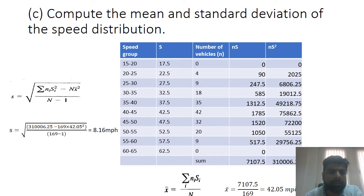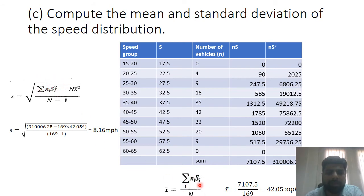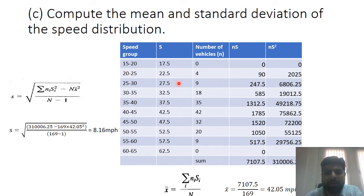The third task is to find the mean and standard deviation. The mean equation requires n (number of vehicles in each speed group) multiplied by s (middle speed). I inserted the middle speed for each group — for example, between 15 and 20 the middle value is 17.5. Multiplying and summing gives 7107.5, divided by 169 total values, yielding a mean of 42.05 miles per hour.